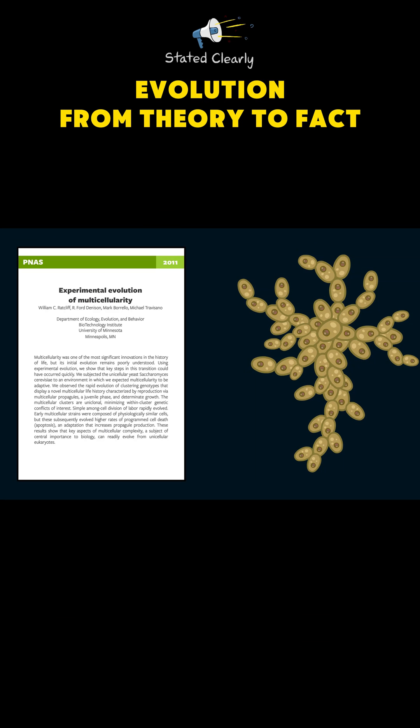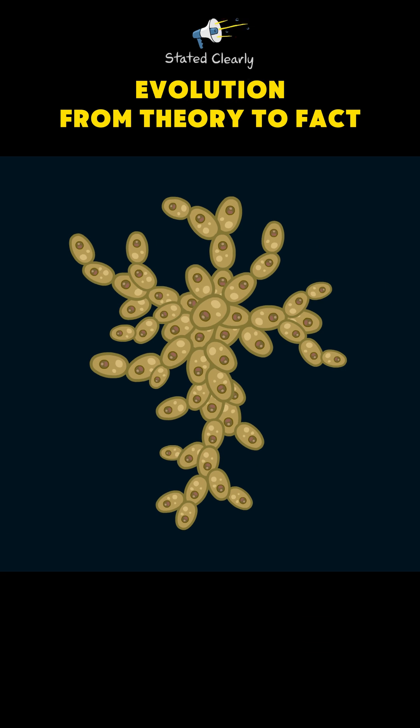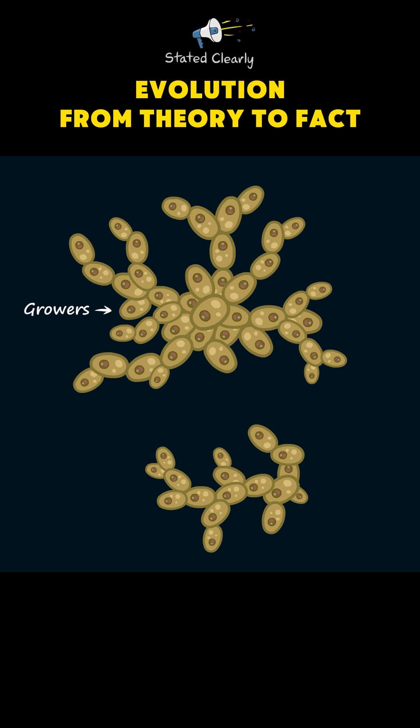A similar experiment on single-celled yeast in 2011 showed that just 32 days after multicellular colonies evolved, clear division of labor also evolved, giving rise to unique cell types specializing in different tasks.